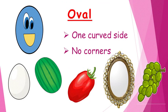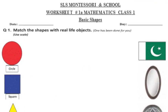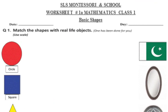Oval has one curved side and no corners. You can find the shape of an oval in many things around you, like an egg, a watermelon, a tomato, a mirror, grapes, etc.